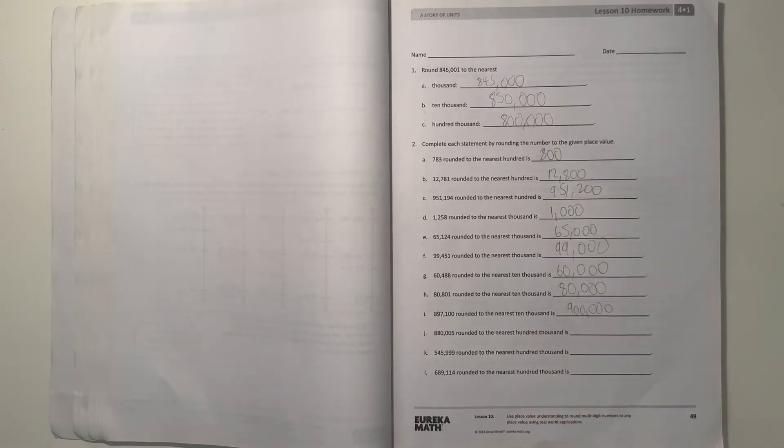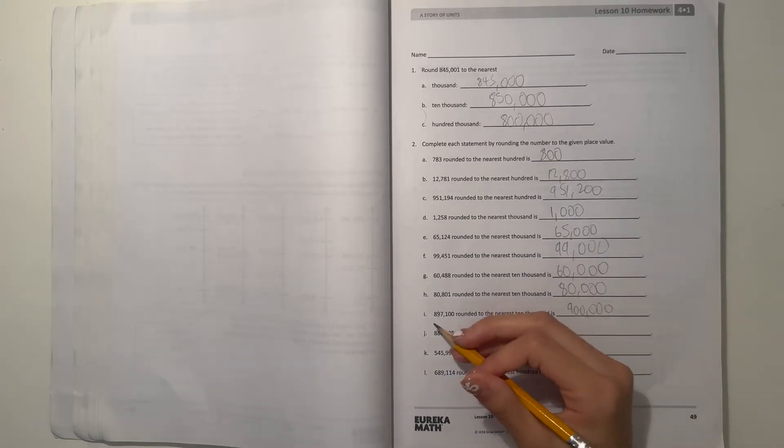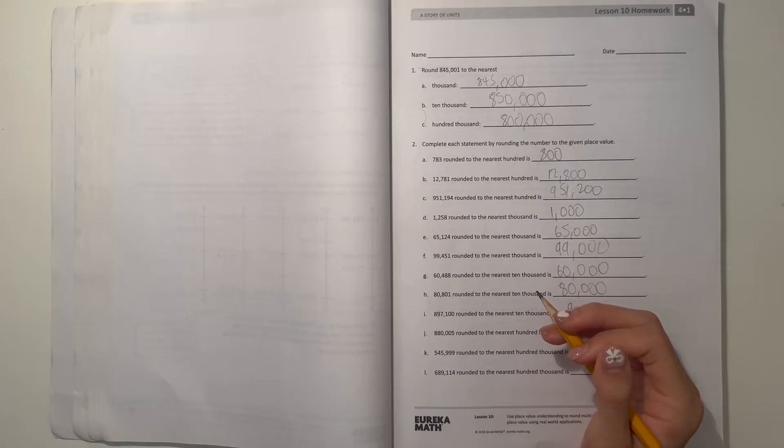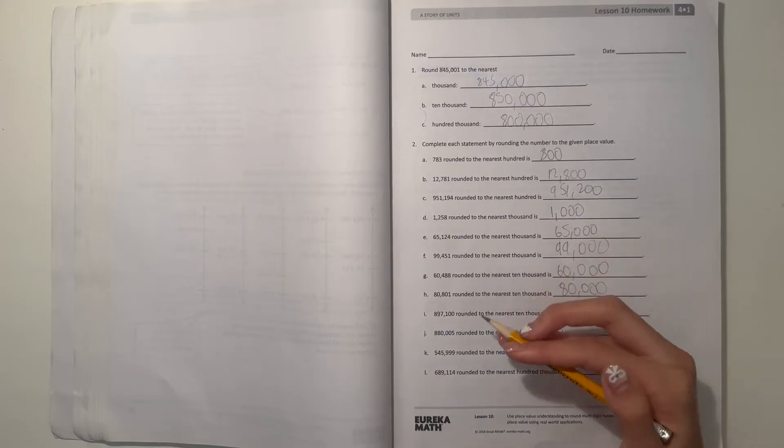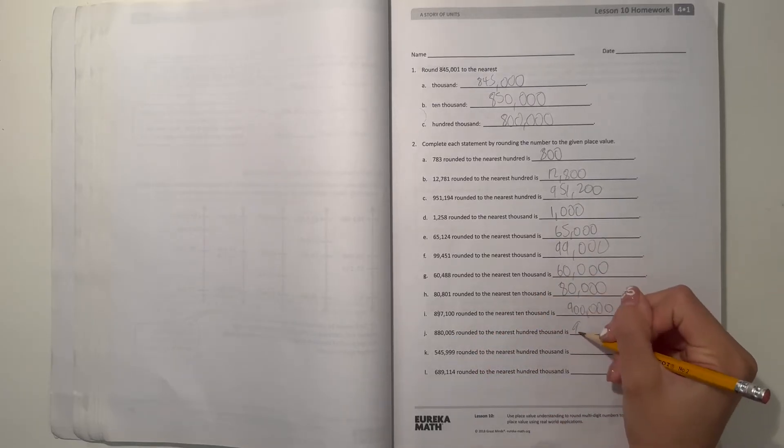All right and J, we have 880,005 to the nearest 100,000, so 880,005 to the nearest 100,000 would be 900,000.